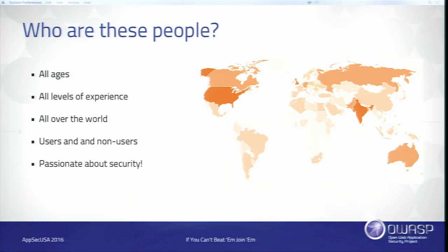They're also your users and non-users. People who actually use your app have a vested interest in making it better because they feel that if you improve things, it makes their life easier. Additionally, you have people who are not your users who might just want the challenge — they test on other programs and come to yours because it's there and offers money for bugs. That's a different perspective and very valuable. Overall, these people are passionate about security, and that's the common denominator.